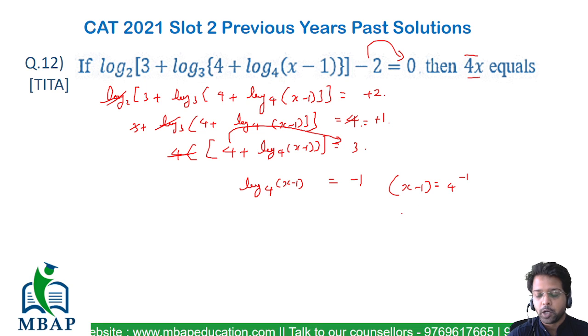4 raised to minus 1 equals 1/4. So x - 1 equals 1/4. Therefore, x equals 1 + 1/4, which is 5/4.